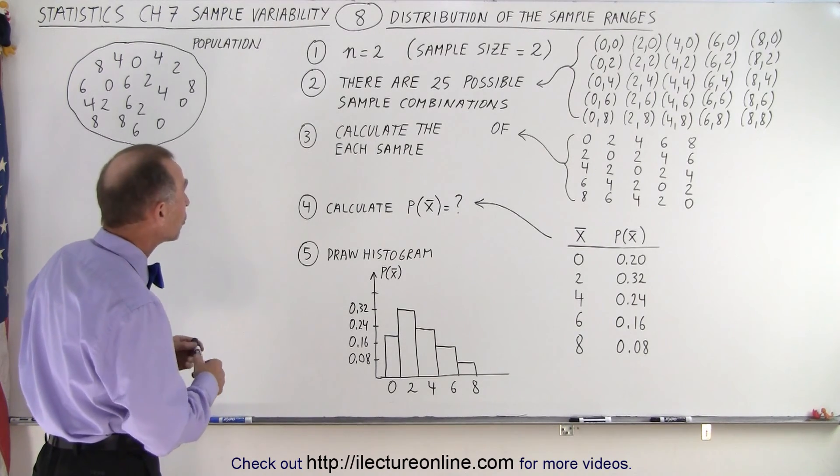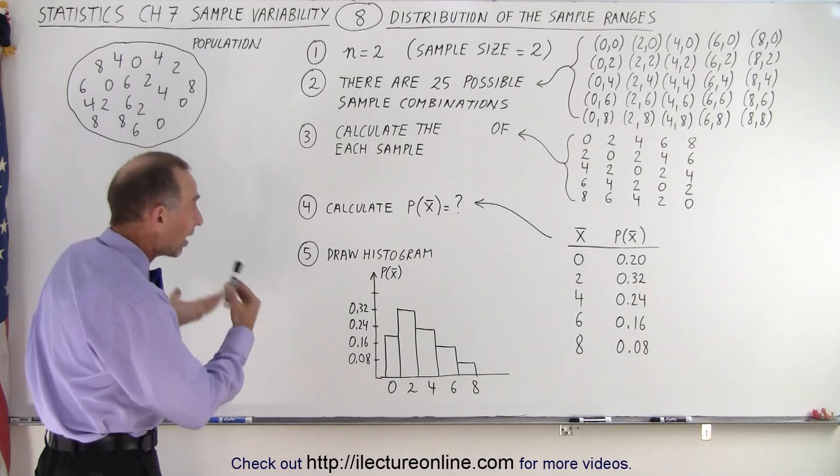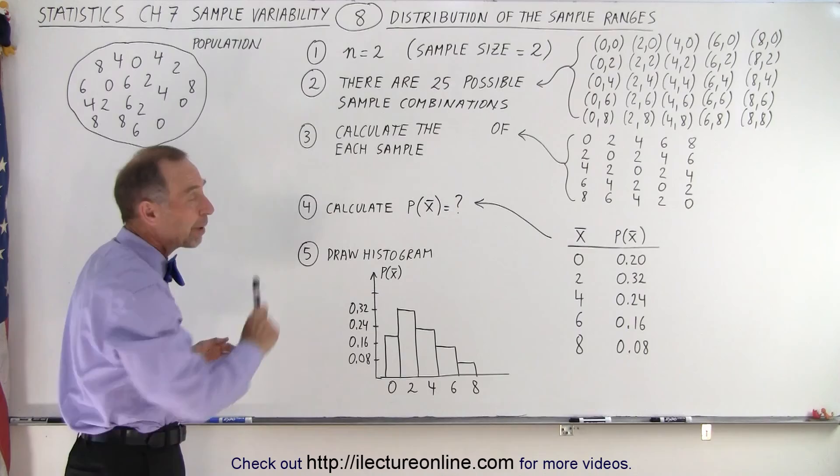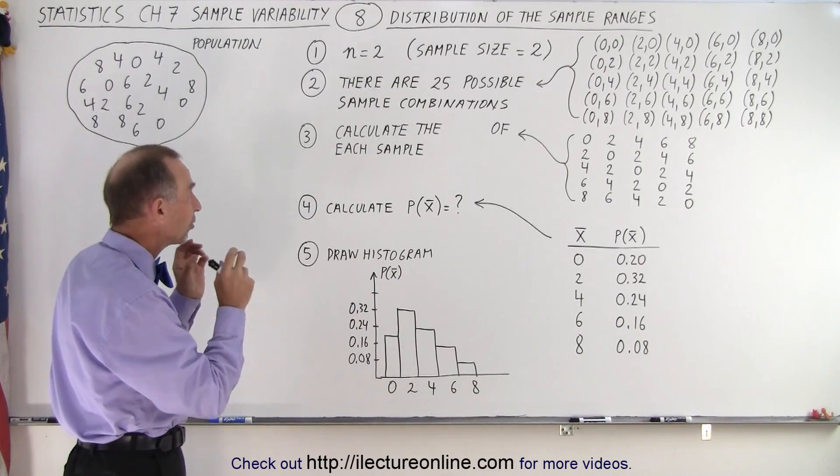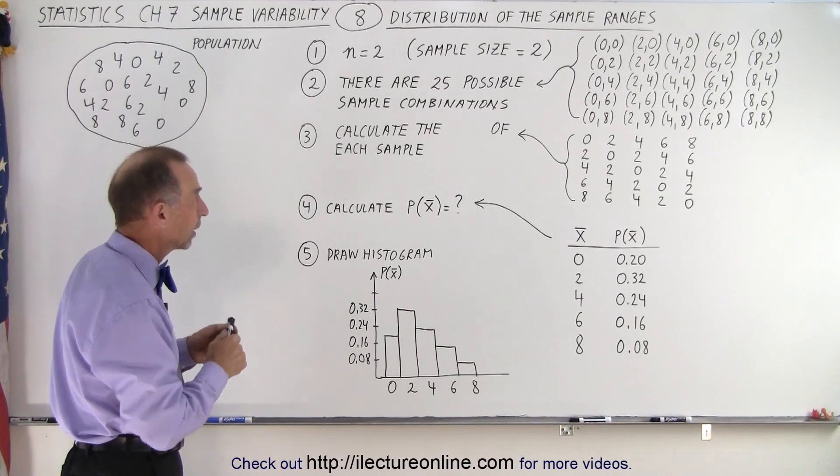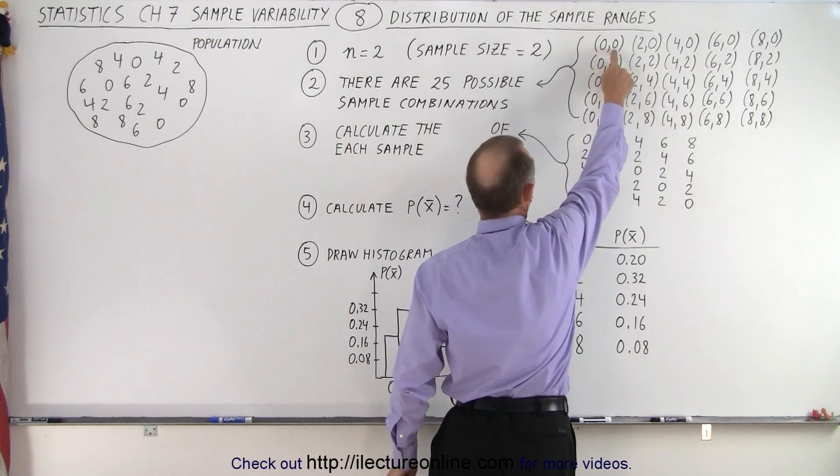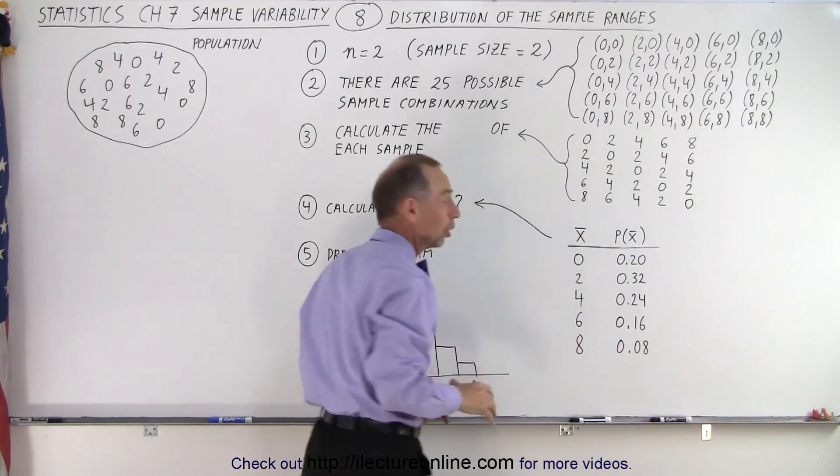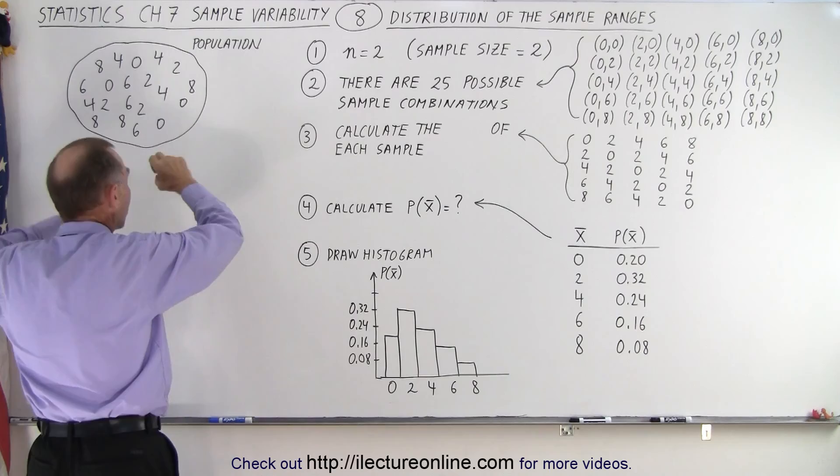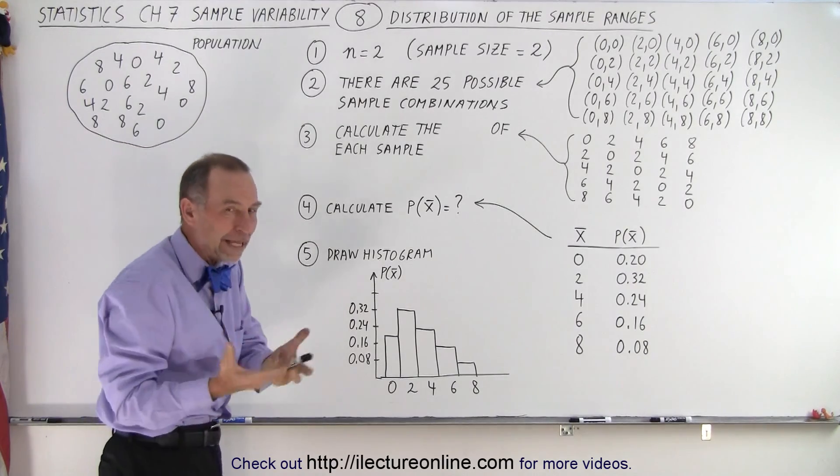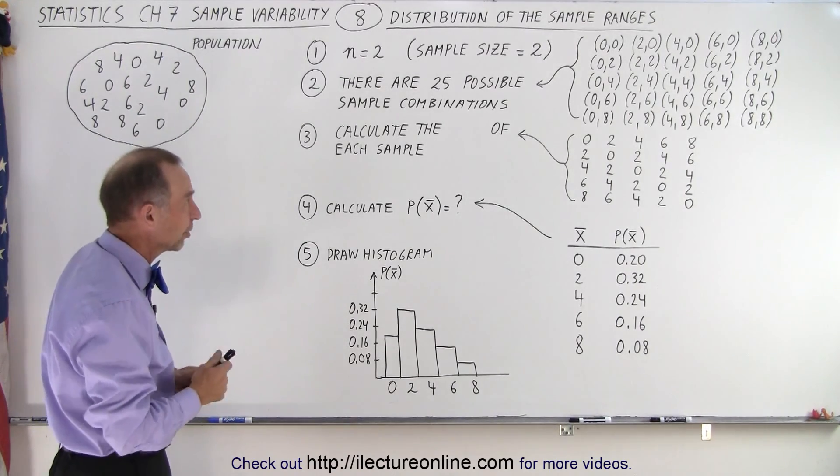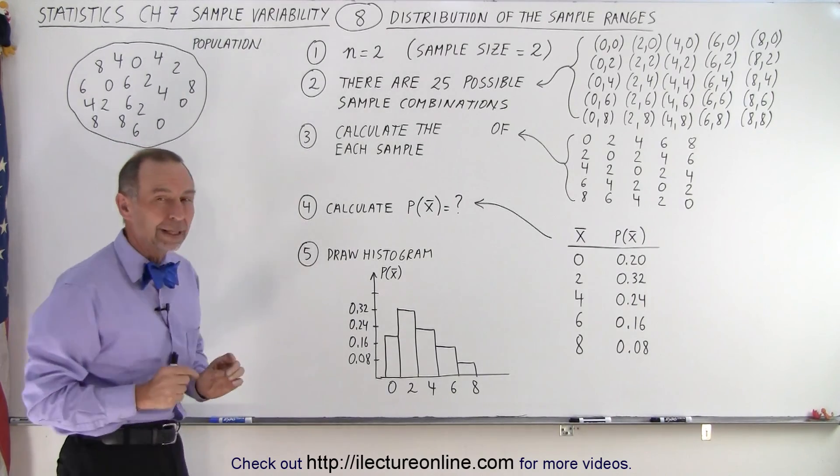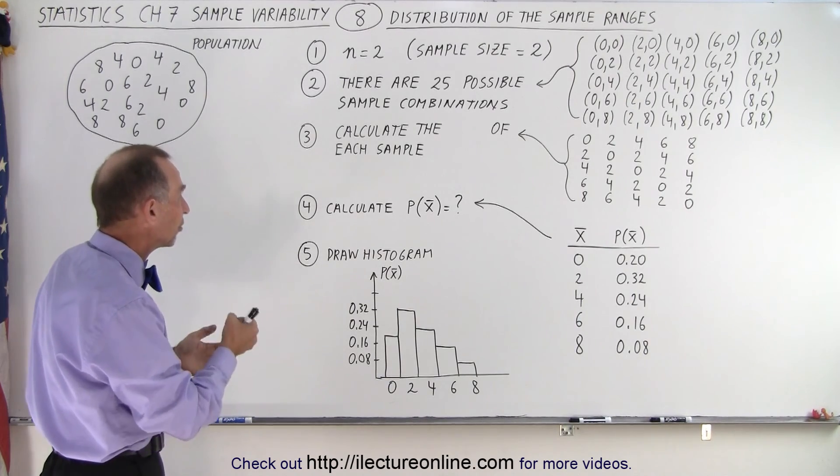Then what we're going to do is again determine the sample size. Since the sample size is 2, there's 25 different possible ways in which we can have a sample of 2, because we can pick a 0 the first one and again a 0 for the second one, a 0 for the first and a 2 for the second, a 0 for the first and a 4 for the second. Assuming that the population is very large, so when we pull one out the remainder of the 0s is still the same, or the remainder of any number is still the same, essentially when we have a very large population. So there's an equal probability that any one of those 25 possible combinations is picked.